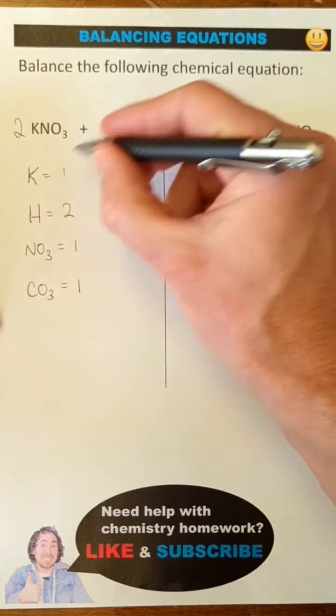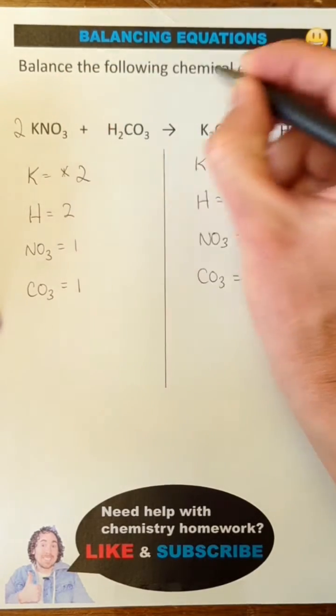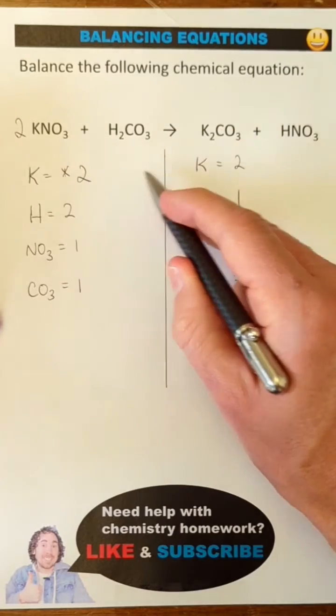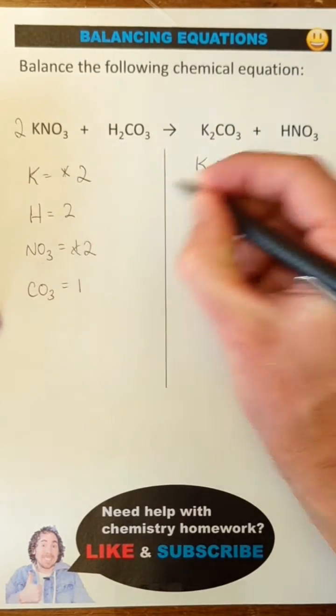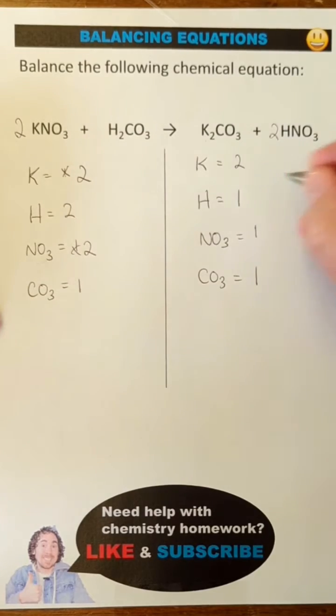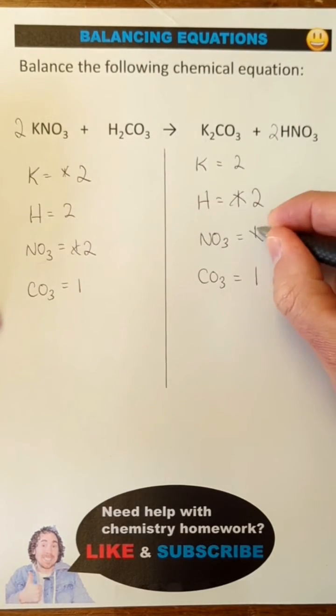First, I can add a coefficient 2 in front of the potassium nitrate so that there's the same number of potassium ions. Notice that this also doubles the amount of nitrate, but that's okay because I still need to add a coefficient 2 in front of the nitric acid. And now everything's balanced.